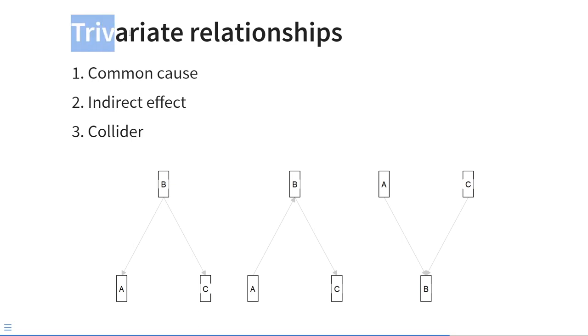With three variables, we are looking into tri-variate relationships, the situation becomes even more complex. Here too, we can distinguish three possible situations. One is a common cause situation. So here we have two variables, A and C, and they're both caused by a third variable B. So B is a common cause of A and C. This is also called a fork, because B forks to A and C.